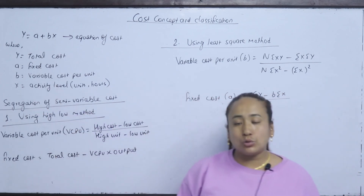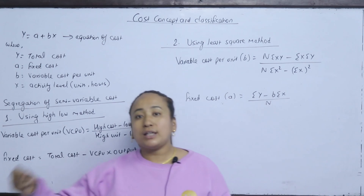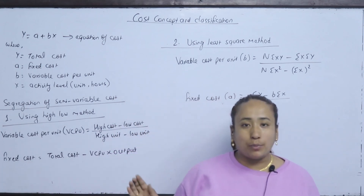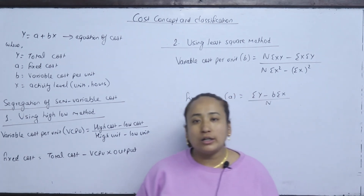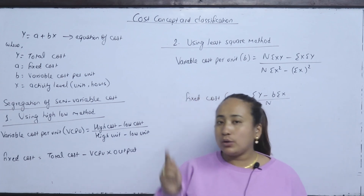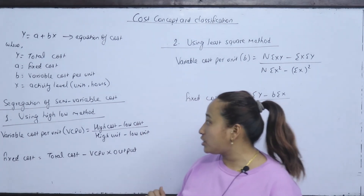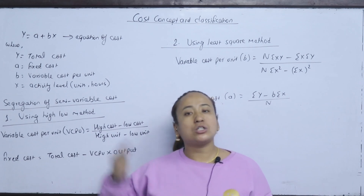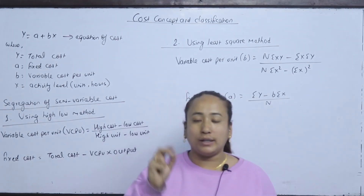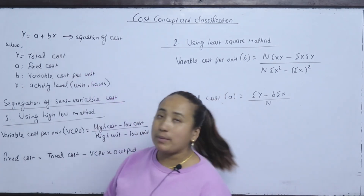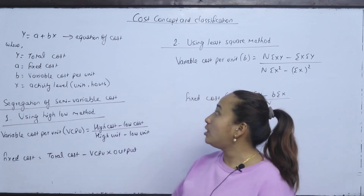If you change price, or if you change the level of production, that means variable cost. If you change the level of total cost, that means variable cost — the activity level in the company will change the cost, which means variable cost. Y equals to A plus Bx is the equation of total cost.